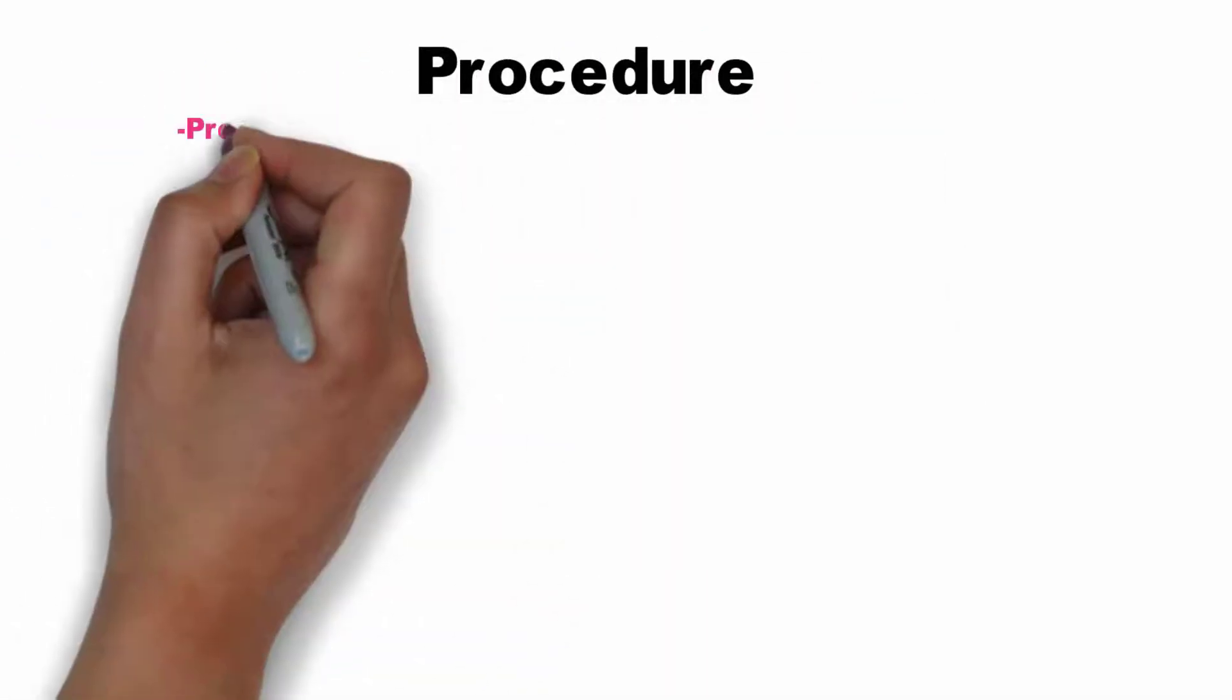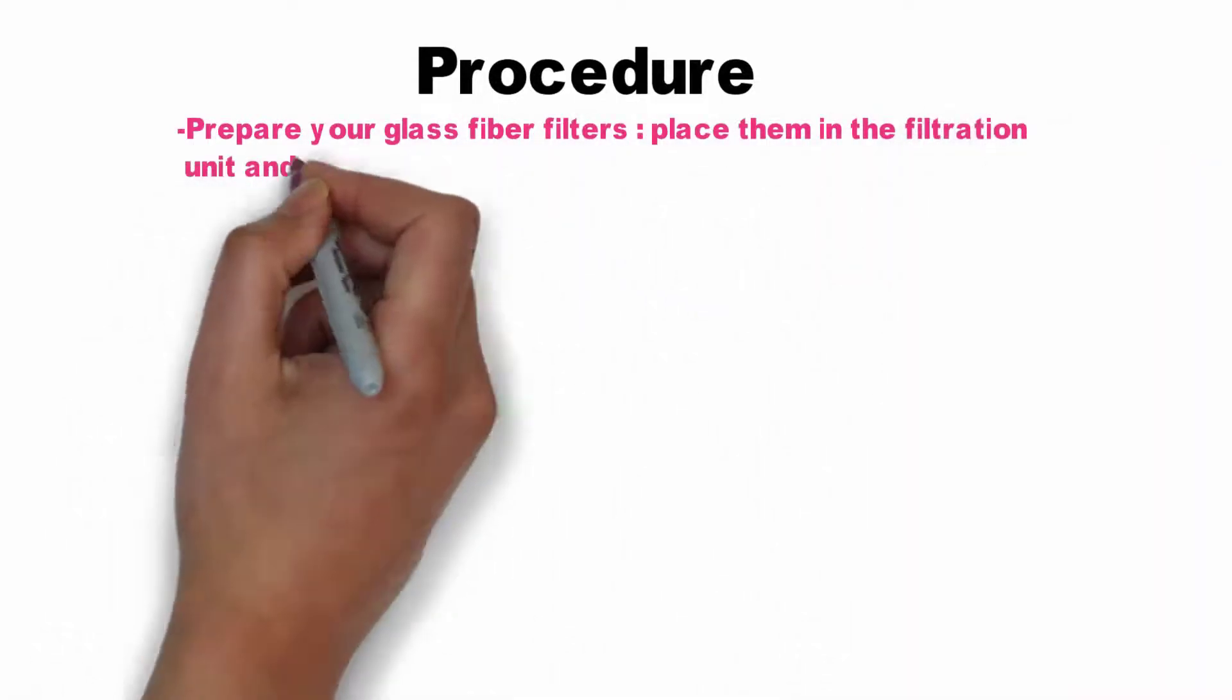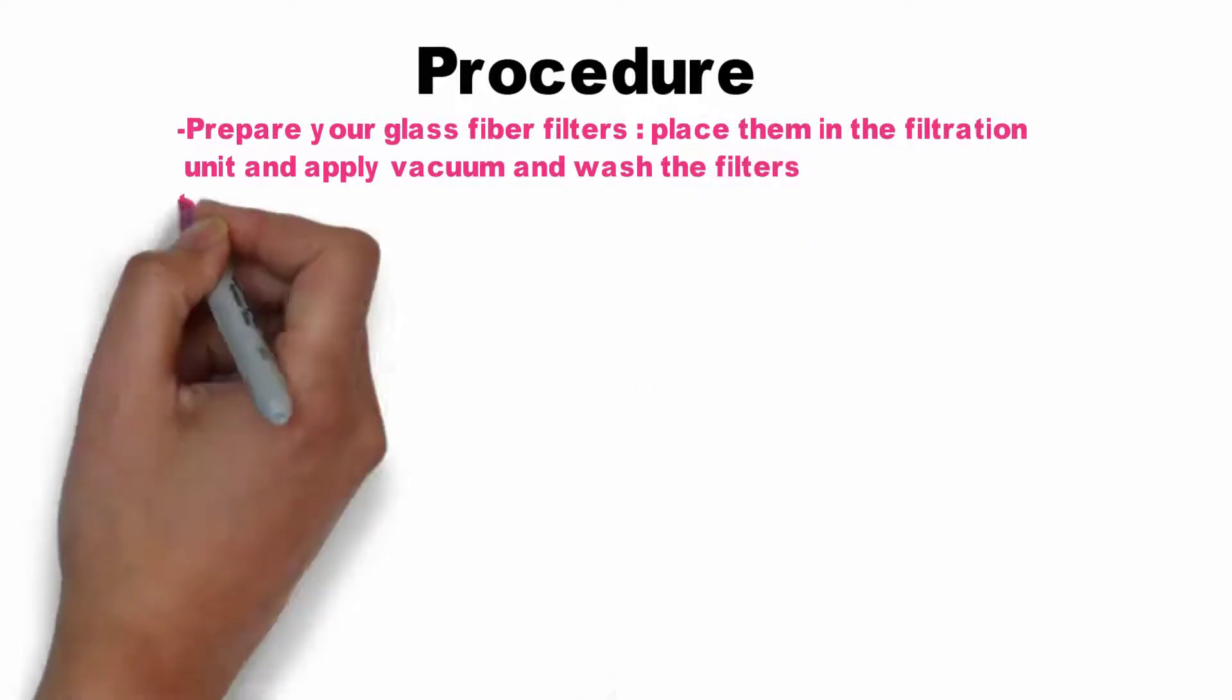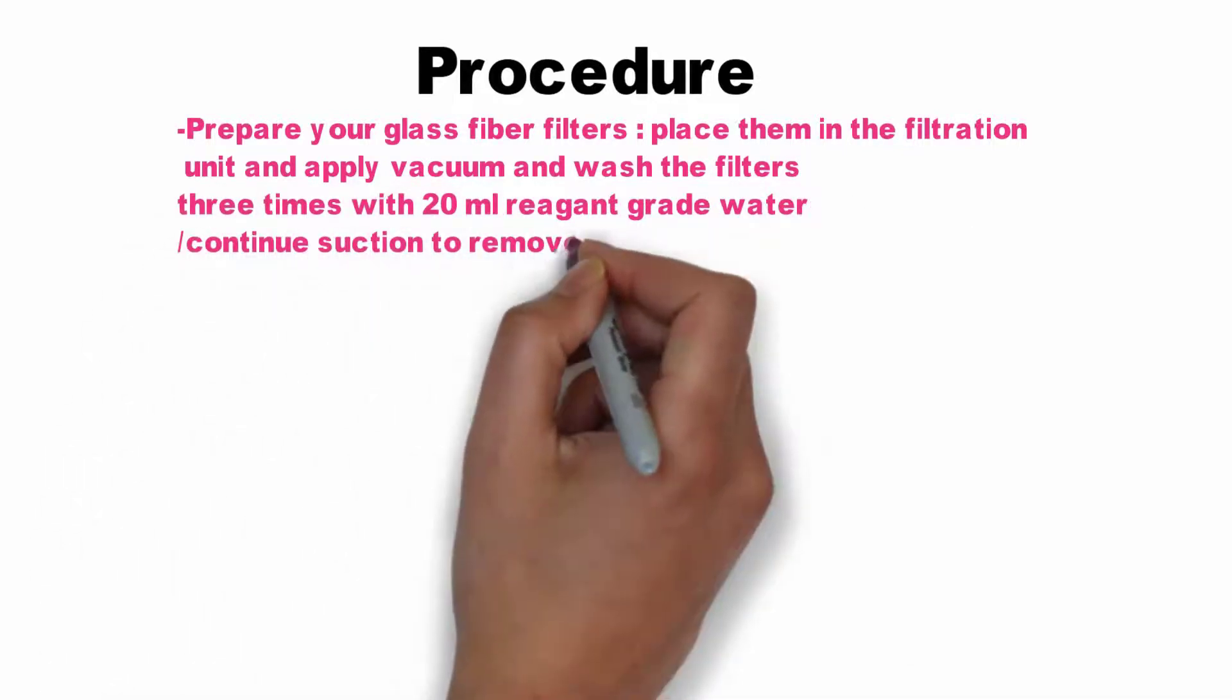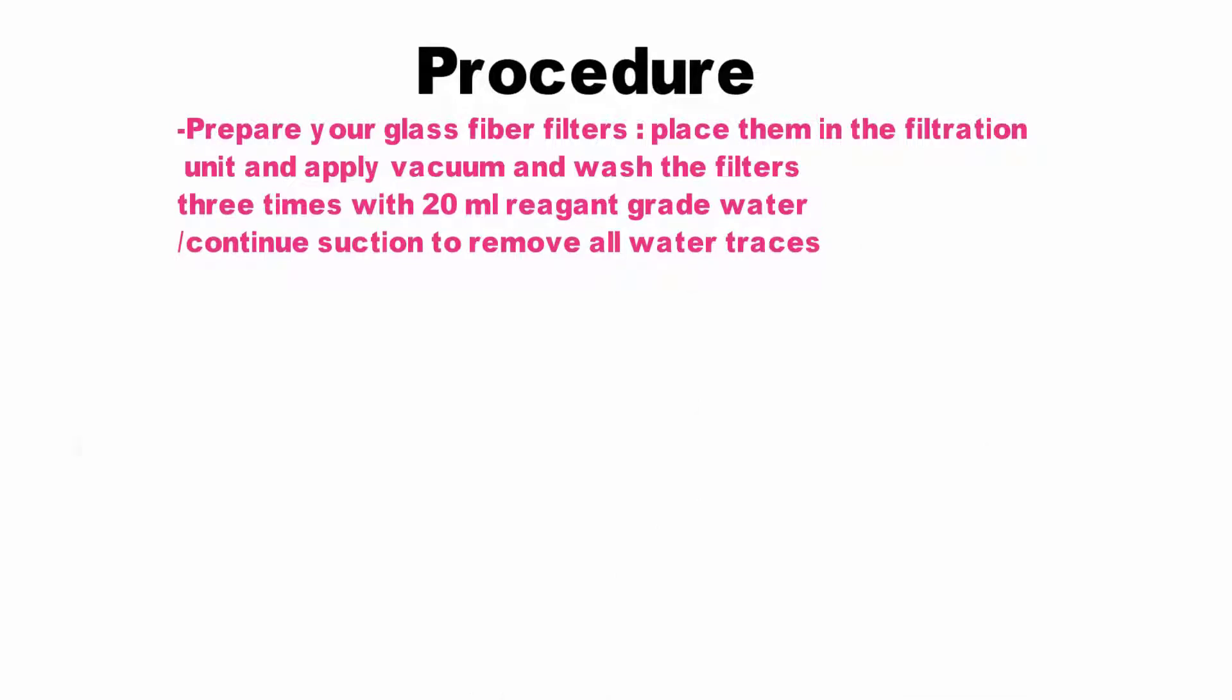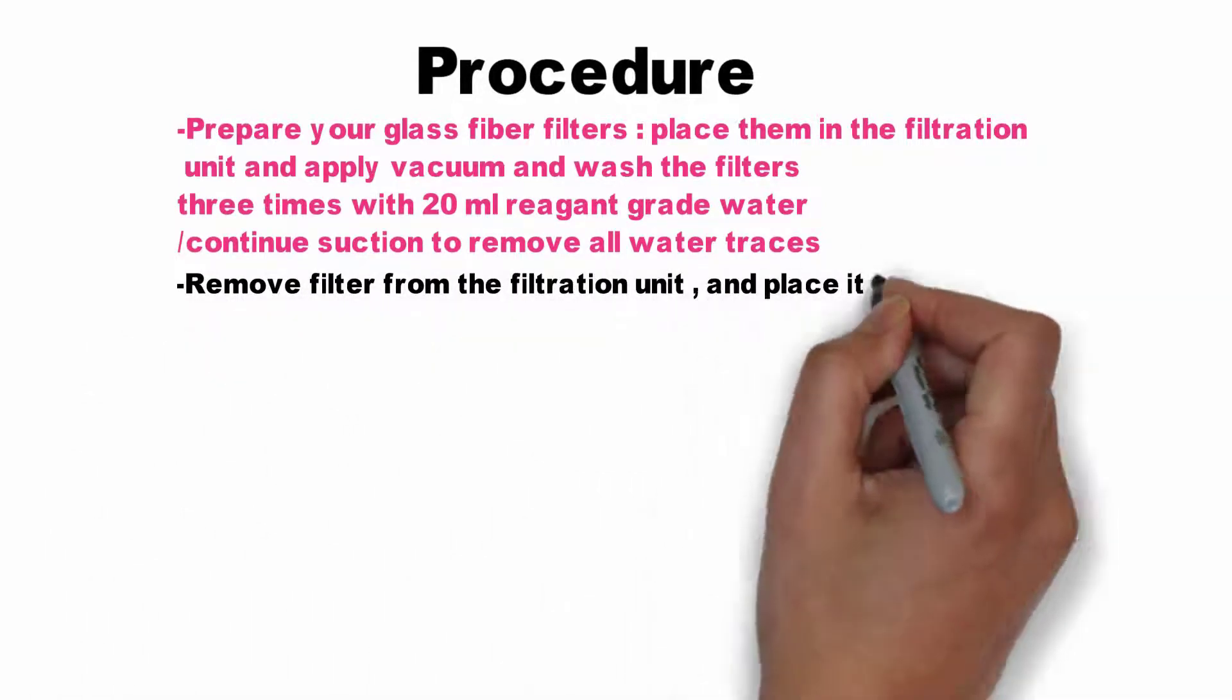Now to the procedure: Prepare your glass fiber filters, place them in the filtration unit and apply vacuum, and wash the filters three times with 20 milliliters reagent grade water. Continue suction to remove all water traces. Next, remove the filter from the filtration unit.